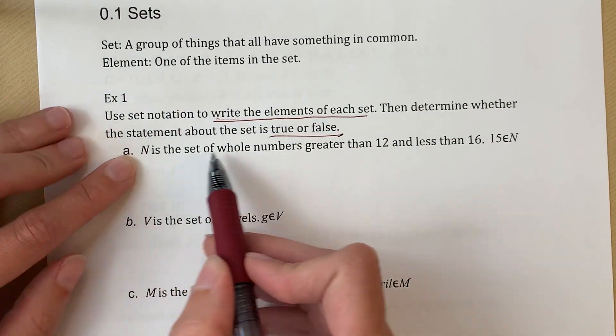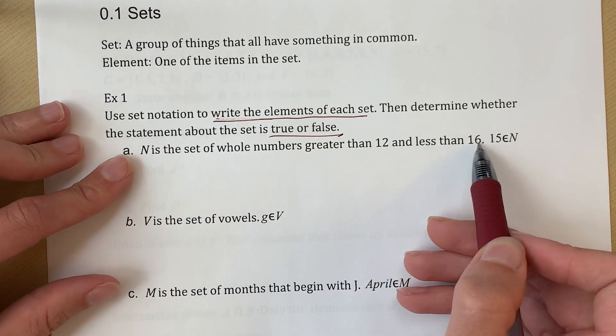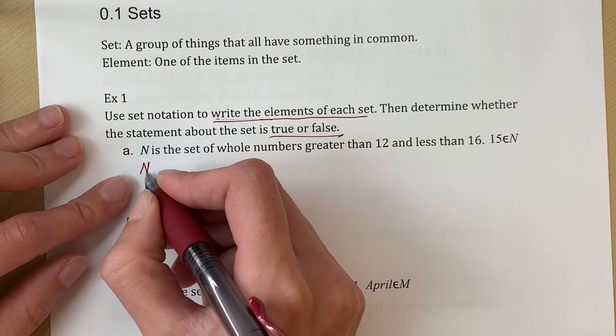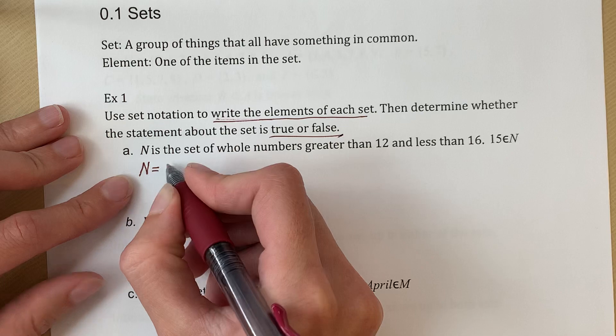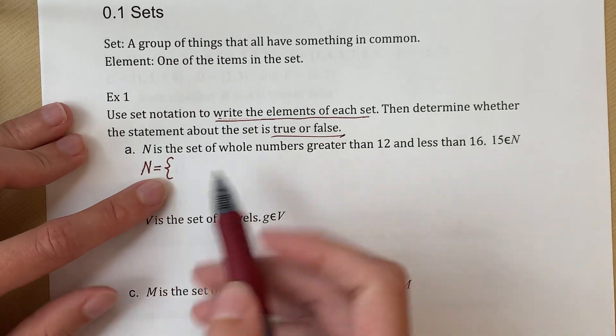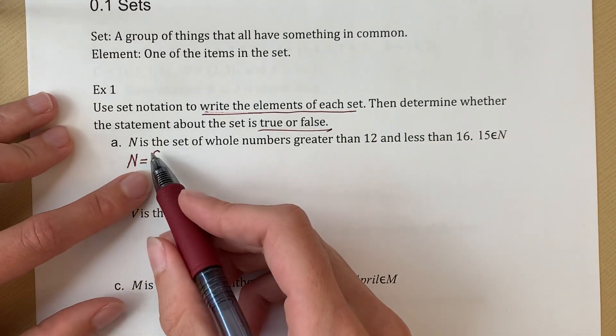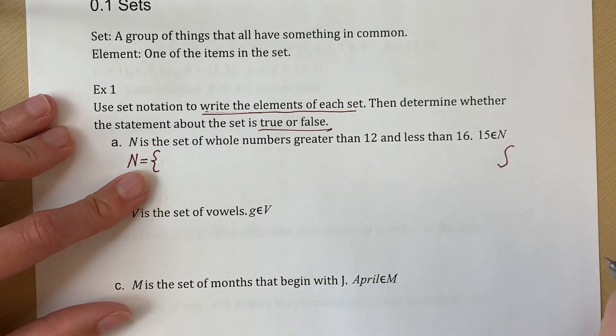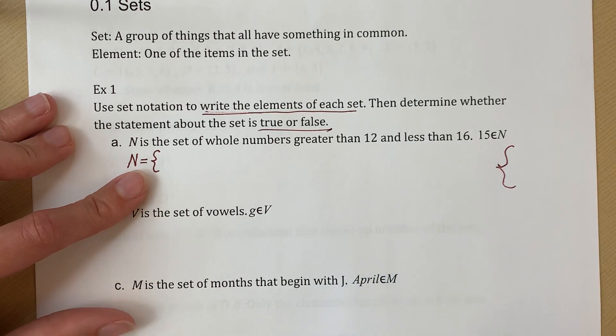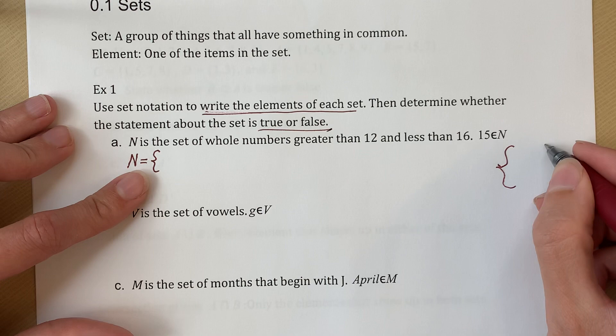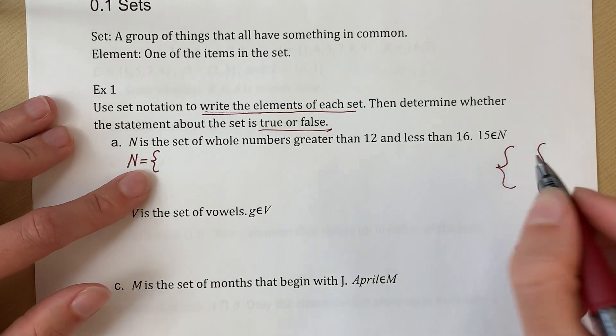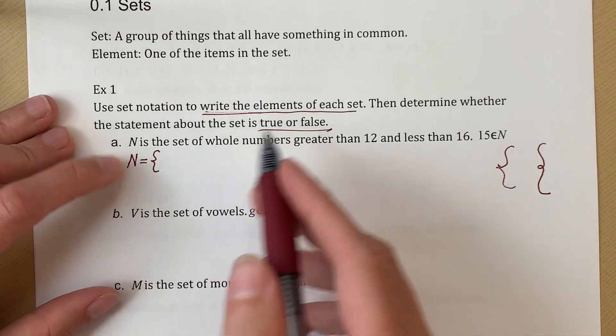So to start, we have N is the set of whole numbers greater than 12 and less than 16. So set notation, we start with N equals, and right here, that symbol is what we use for set notation. Now, people often struggle to draw this when they first start. Some people will do one side, and then the other side. Mine looks junky as you can see. Others just put like a little swoop in there. This is the version I usually use, but whatever works for you.